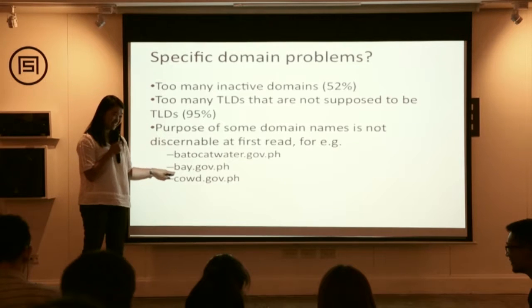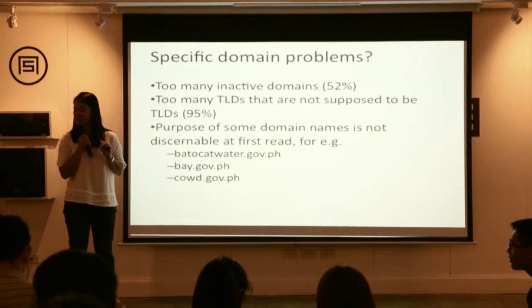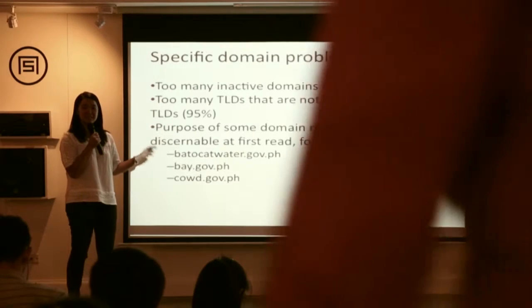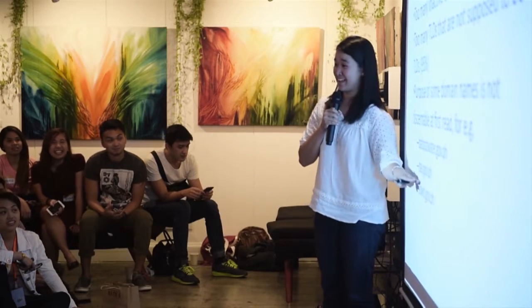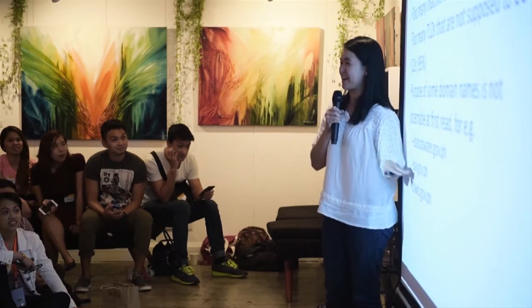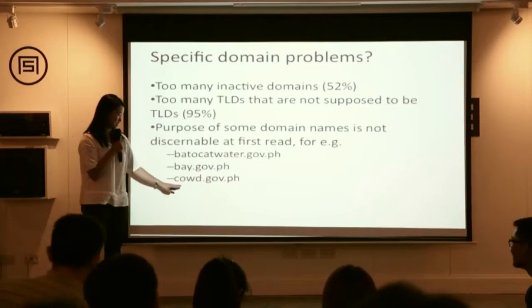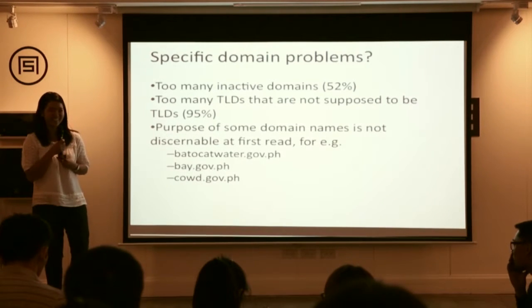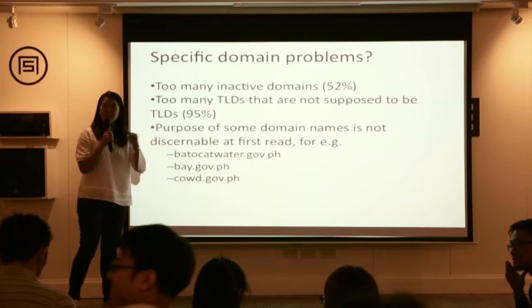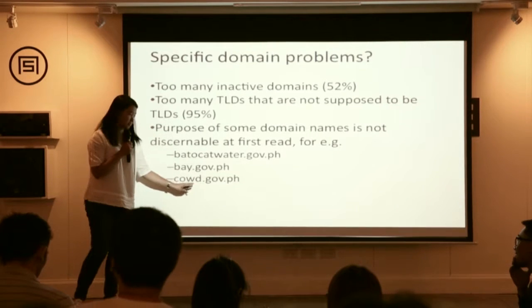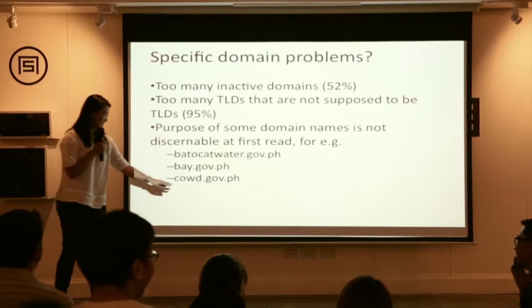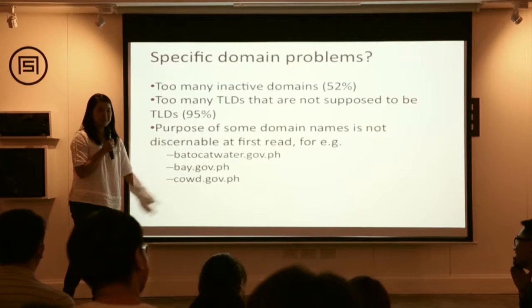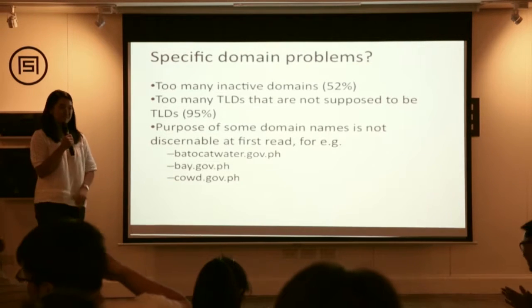And then there's another example — who's from Laguna? It's Pahe — Pahe and Golden Beach. And then another one: 'Cowards' — it's also a water district. And 'WT' — Water District, Cotabato. It's a mystery, right? How would you know which agency this is?